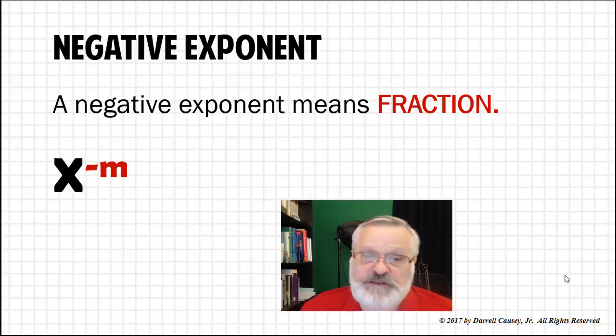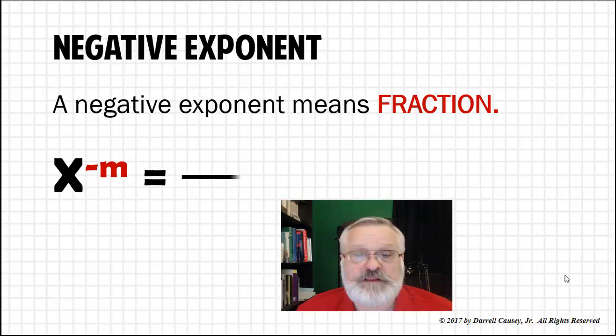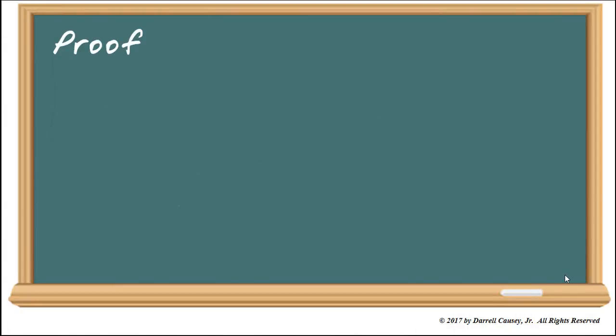Here's an example. x to the negative m equals one over x to the m. It's that simple.